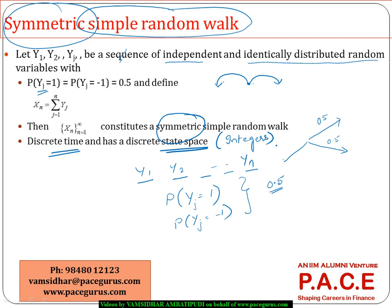As we know, if the probabilities are p and 1-p, where they lie between 0 and 1, we call it a normal simple random walk. But if specifically we have 0.5 as the probability for both increment and decrement, we call it a symmetric simple random walk.